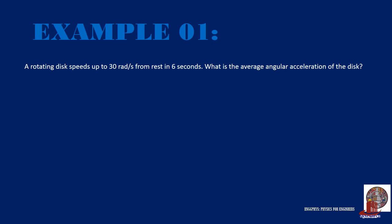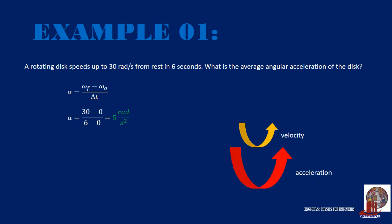Let's take an example. A rotating disk speeds up to 30 radians per second from rest in 6 seconds. What is the average angular acceleration of the disk? Using the formula alpha equals (final omega minus initial omega) over delta t, and noting that the disk starts from rest so initial values are 0, we get (30 minus 0) over (6 minus 0), giving positive 5 radians per square second. The positive value indicates counterclockwise motion, and the positive acceleration means the speed is increasing.